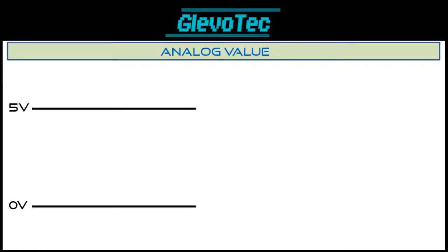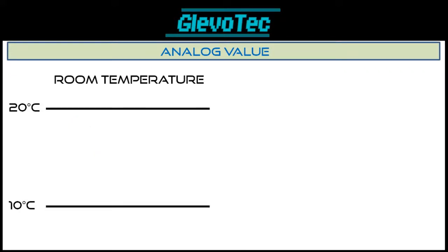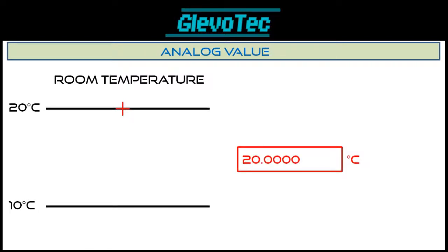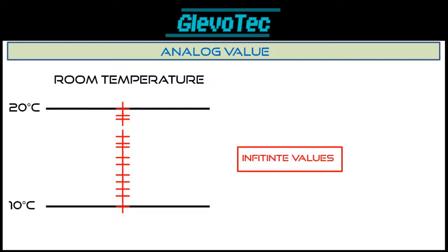An analog value is a range. An analog voltage signal can be anywhere between 0 and 5 volts, for example — there are infinite values between those two limits. There are no steps, so the value can be anything. This is just like the temperature of a room, which could be anywhere between 10 and 20 degrees Celsius: 20.0000, 15.45316, or even 12.99993. There are infinite possibilities.